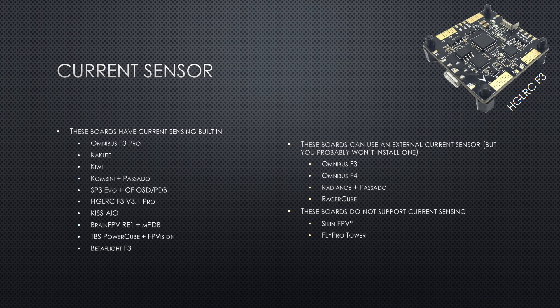I feel like a current sensor is mandatory on an OSD. I want to know how many amps I'm pulling, and I want to know when I'm done flying based on milliamp hours discharged. Many people are fine with just a voltage readout — if you're one of those people, skip this. Here are the boards with current sensing built in. There are also some boards with an input for an external current sensor, but in reality you're not going to install an external current sensor. It's like saying you'll floss every night — you're not going to install a current sensor either.